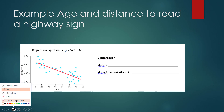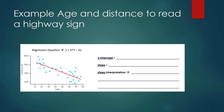We're going to practice using that regression equation in the context of age and distance to read a highway sign — the example we've been looking at. The regression equation is: y-hat equals 577 minus 3x. This equation creates the regression line. The y-intercept — always the value that stands by itself — is 577, and the slope is negative 3.